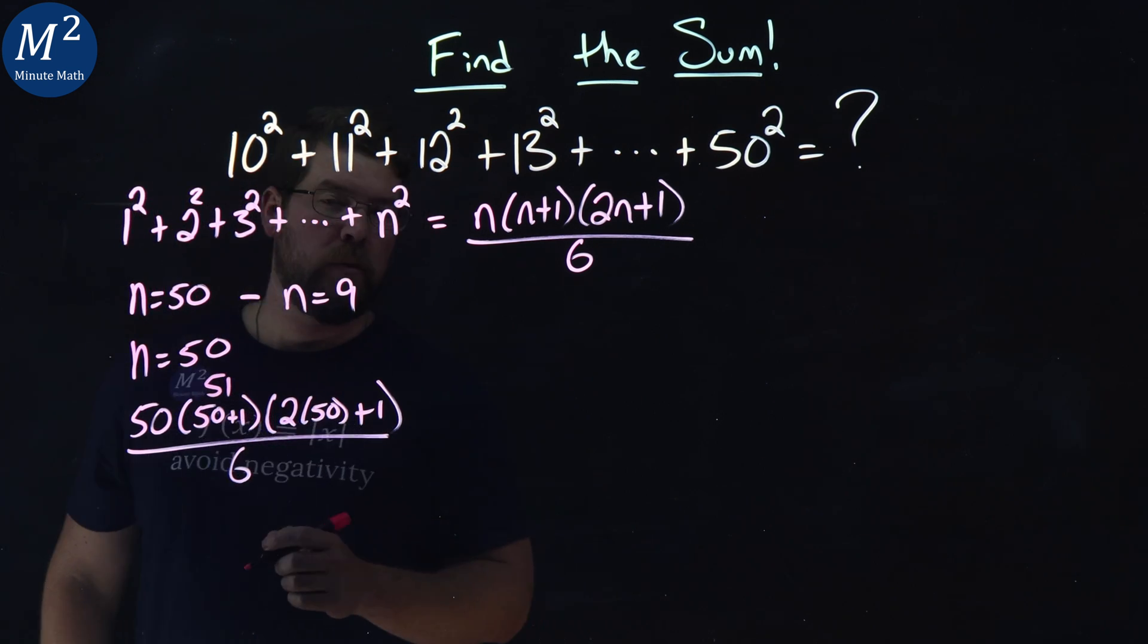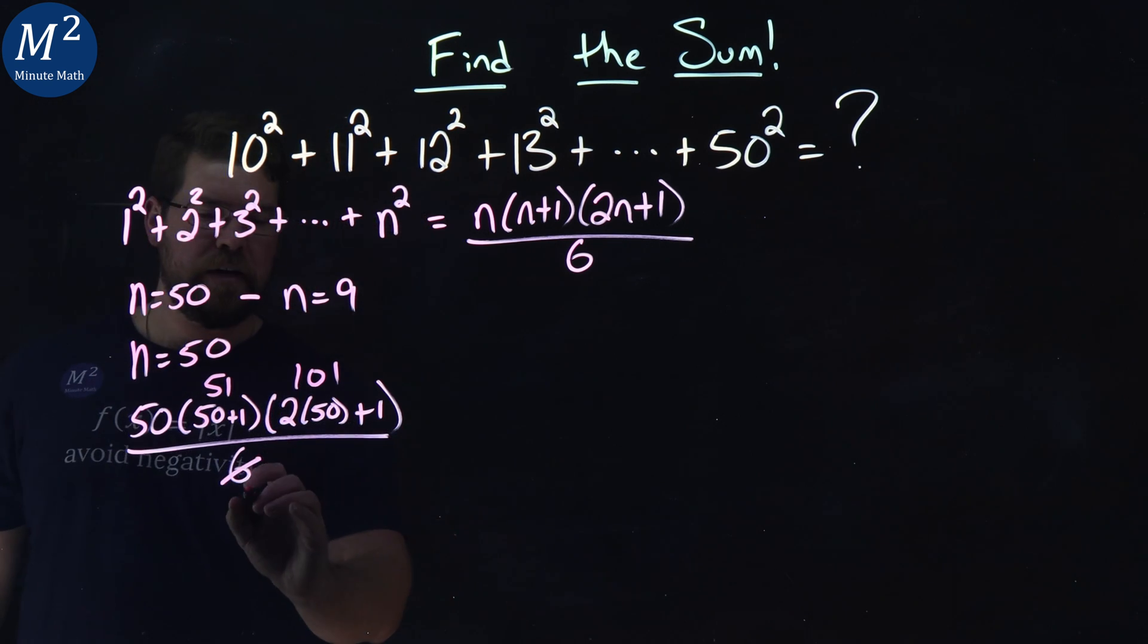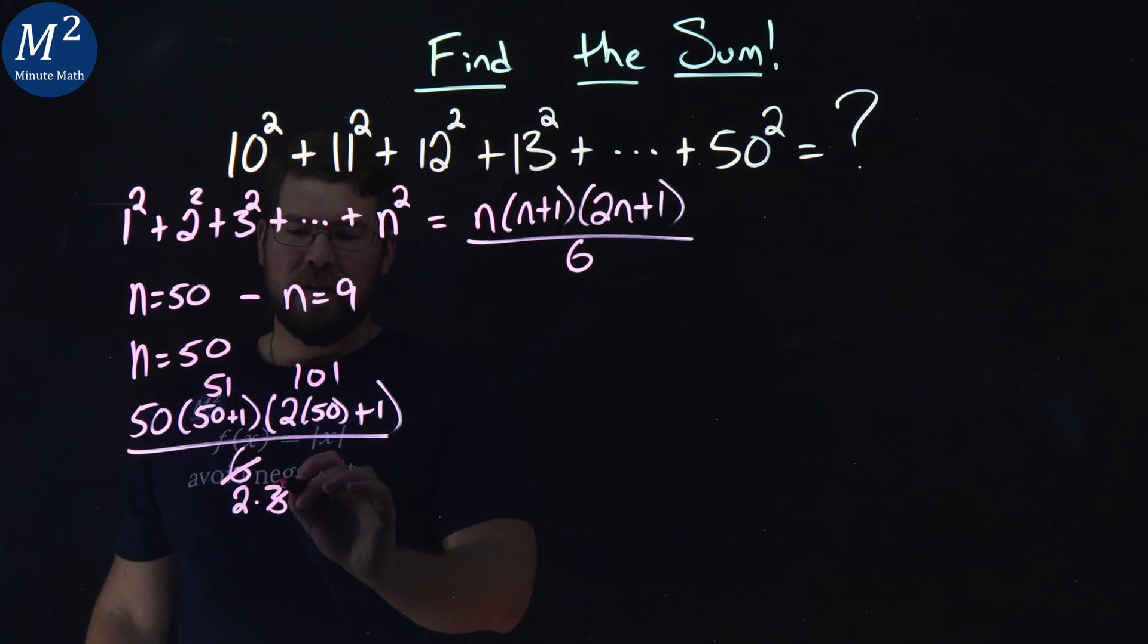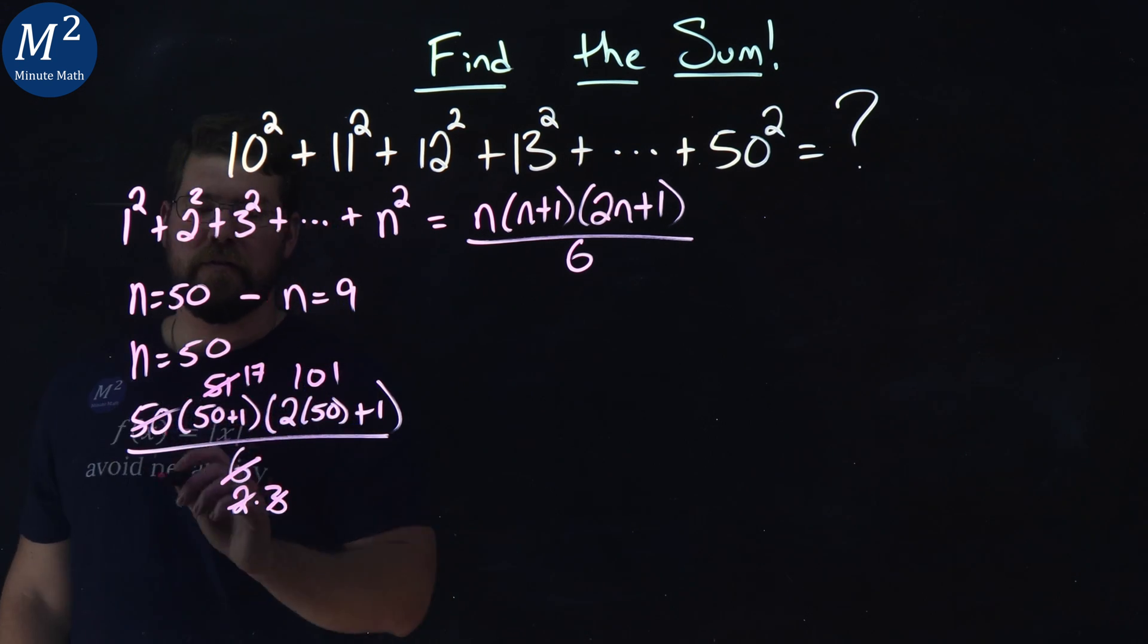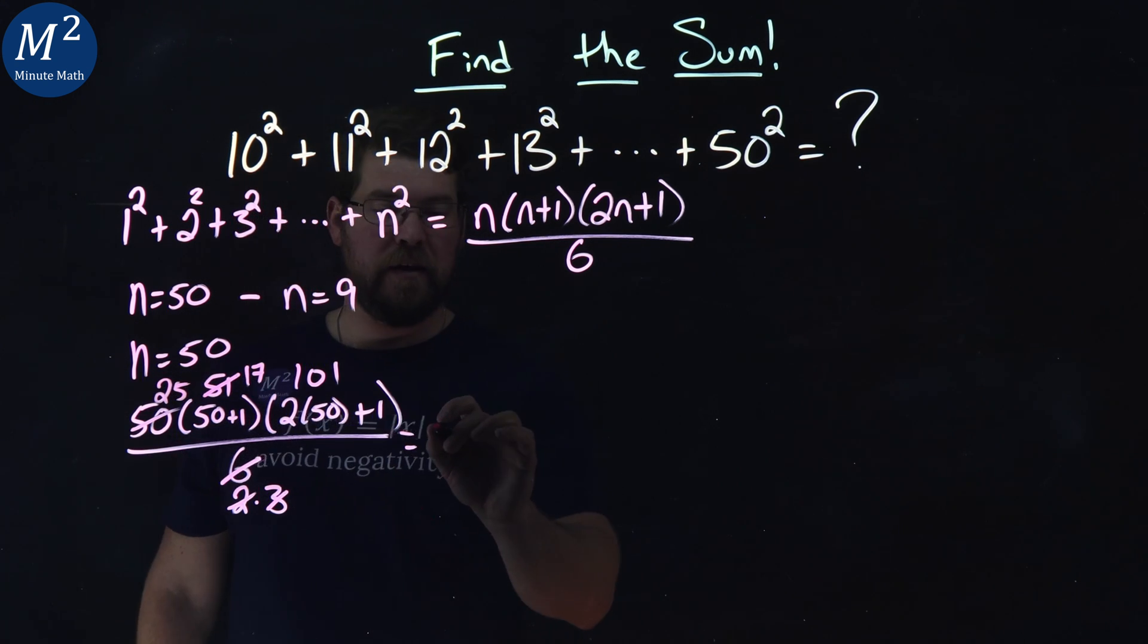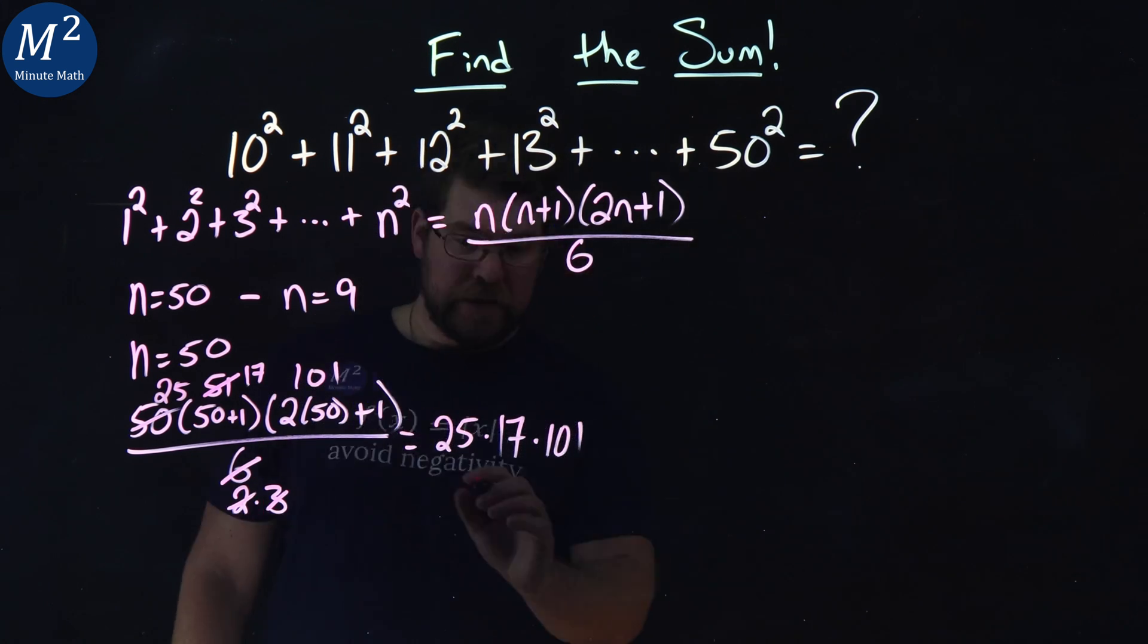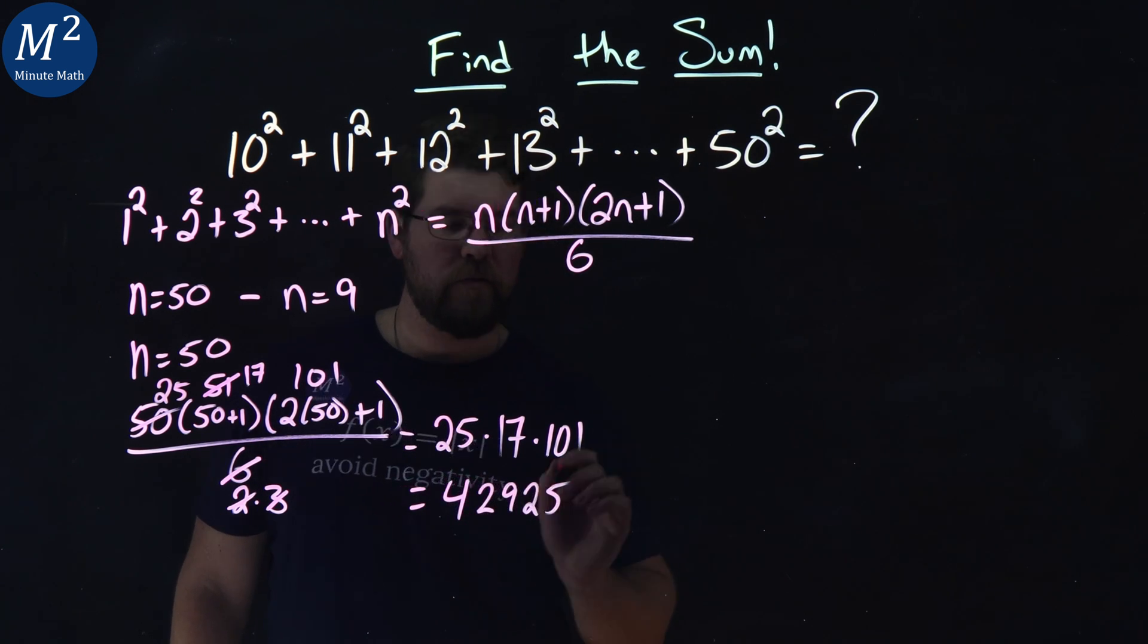2 times 50 is 100, plus 1 is 101. 6 here is 2 times 3. Now I have my notes here. I don't usually have this off the top of my head, but 3 goes into 51 17 times, 2 goes into 50 25 times. And so this first part here should simplify to be 25 times 17 times 101, which I simplified is 42925.